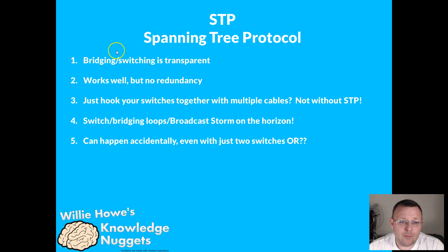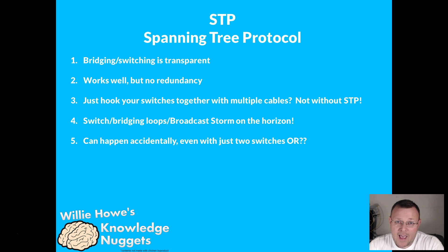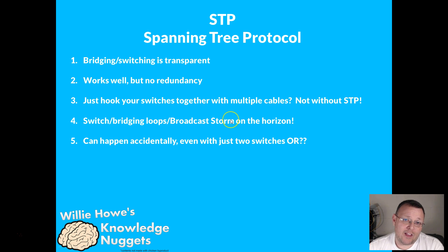Most of the time, bridging and switching is done and it is transparent. When it is done and there are no problems, it works really well. But there is no redundancy. So what some people like to do is just take multiple switches and run two or three cables between them. Horribly bad if you have no STP. If you do that, you will have switch or bridging loops and broadcast storms on the horizon, and they will crash your network.